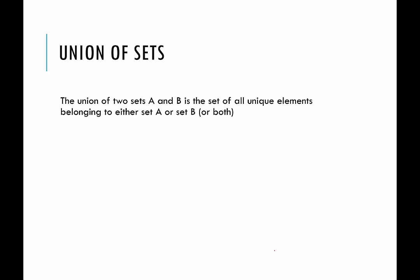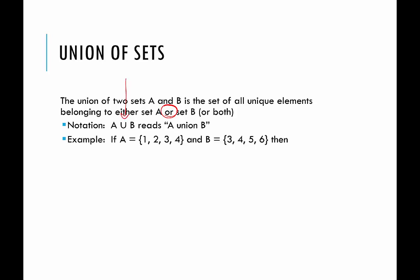Now looking at the union of two sets. The union of sets A and B is the set of all unique elements belonging to either set A or set B or both. When we think of union, we think of the word 'or.' I say unique because if an element is in both, we only write it one time. The notation is A union B, and I like this symbol because it looks like the letter U, which stands for union.